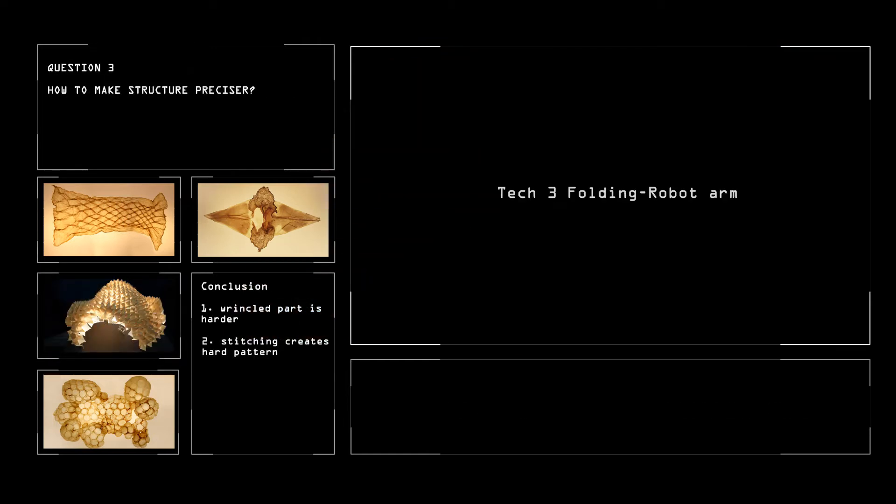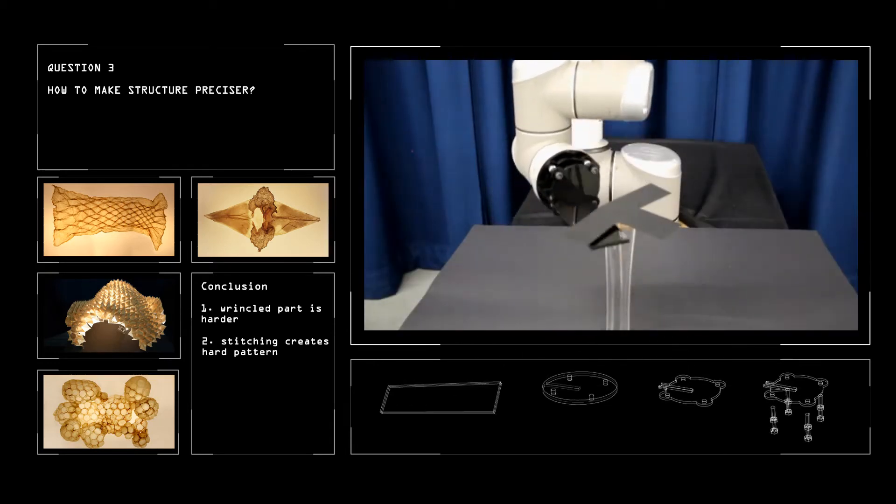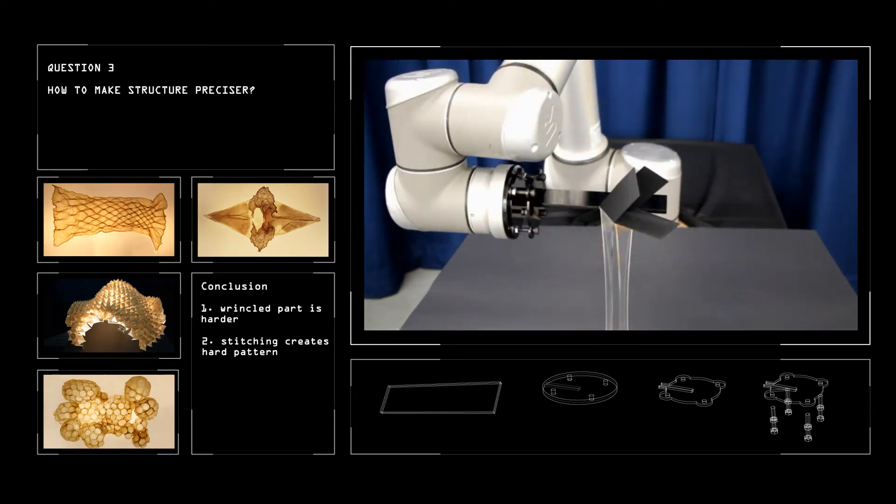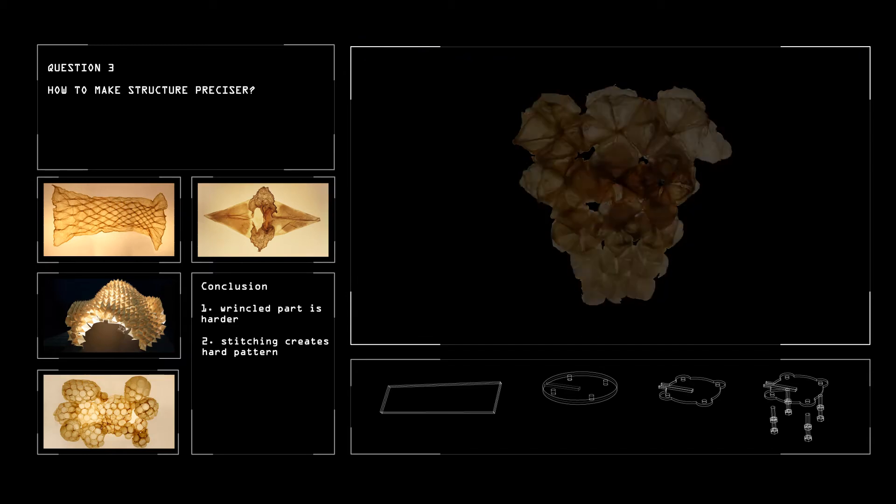Then in order to get a precise shape, this project explores to use robot arm to fold a 3D unit by a piece of cellulose. However, because of the property, the robot arm only works on paper. So we fold it manually and start to combine them together.